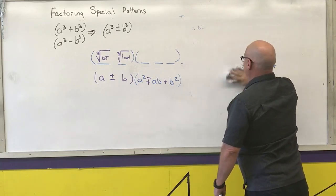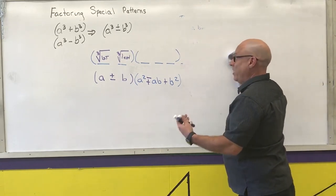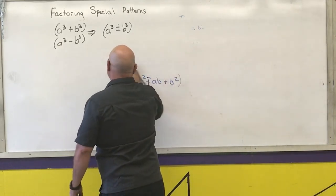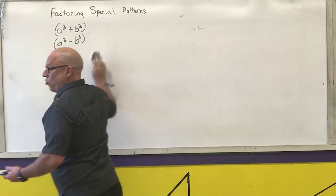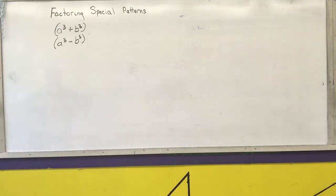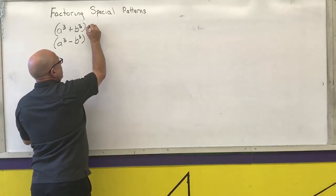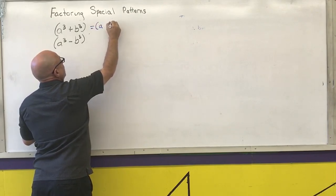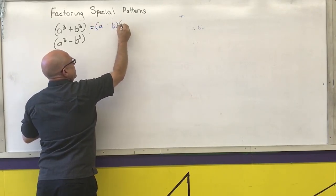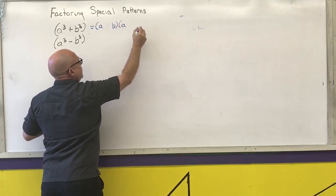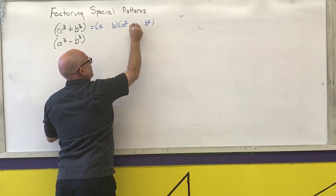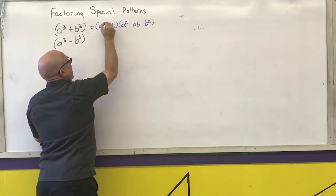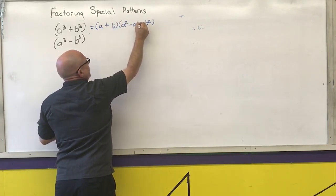My recommendation is to do things the same way every time — use the same words. I speak them out loud in class, and I speak them in my head when I'm doing those problems. So: cube root of the first, cube root of the last, that number squared, that number squared, that product, copy, change, always positive.